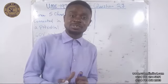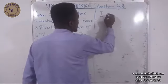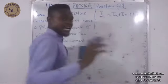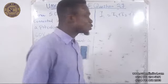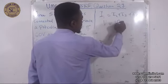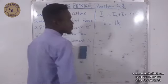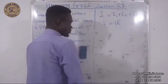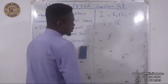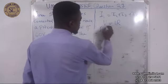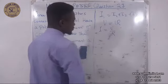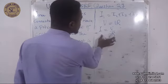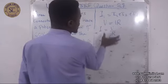The total current is I1 plus I2 plus I3. Remember Ohm's Law: V equals I times R. This means I equals V over R. Let us incorporate this into the equation.